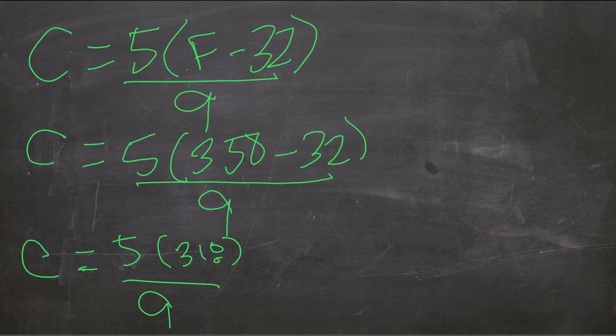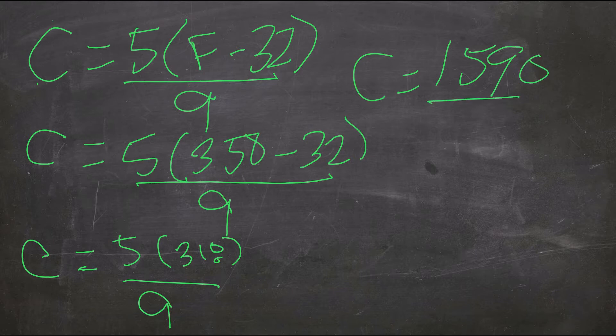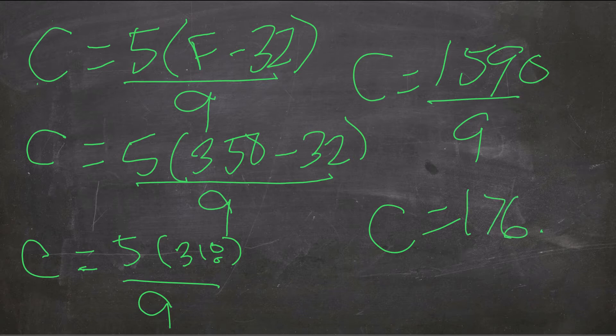Next, I'm going to do multiplication, since that's in the numerator of that big fraction bar. So I'm going to do 5 times 318 first. So I get C equals 1590 all over 9. Go ahead and do that division. So I get my Celsius degrees is 176.6 repeating degrees.